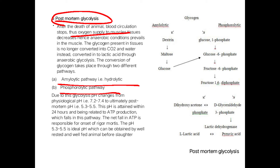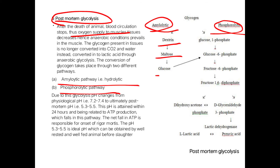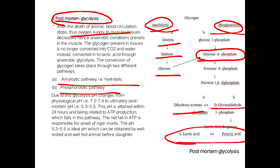Glycogen conversion to lactic acid can occur via two pathways. In the amylolytic pathway, glycogen is converted to dextrin, then to maltose, then to glucose. In the phosphorylytic pathway, glycogen is converted to glucose-1-phosphate, then to glucose-6-phosphate, which is equivalent to the glucose from the amylolytic pathway. It then breaks down into fructose, dihydroxyacetone phosphate, and D-glyceraldehyde phosphate, and finally into lactic acid, which may be further converted into pyruvic acid.